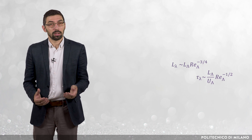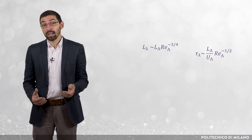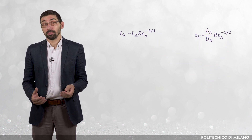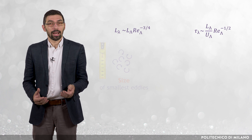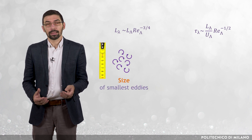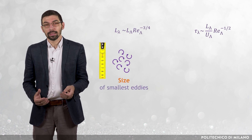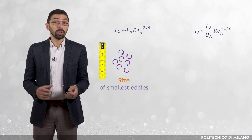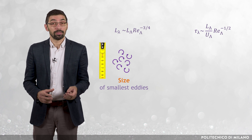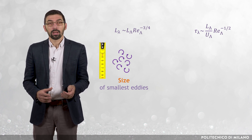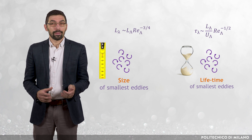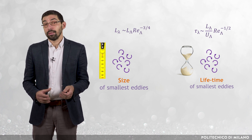But what is the meaning of L_λ and τ_λ? Broadly speaking, L_λ is the characteristic size of the smallest turbulent structures of the flow, often referred to as eddies, whereas τ_λ is a measure of their lifetime.